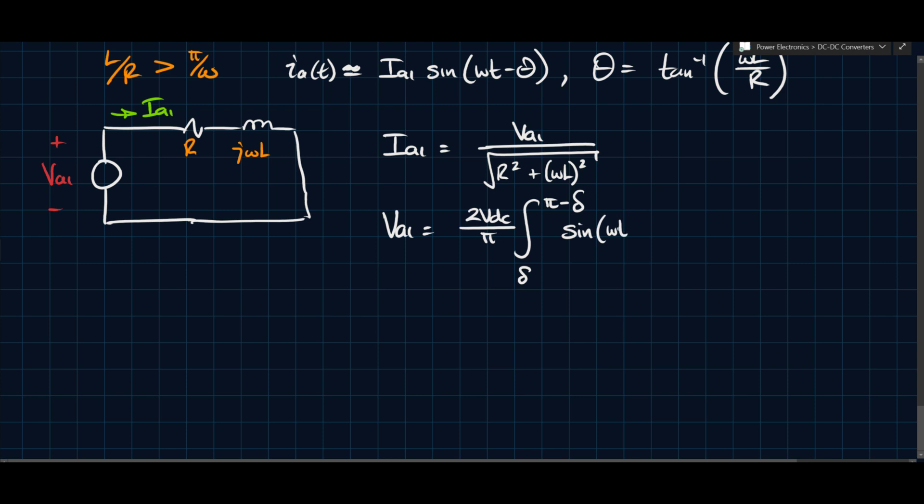You probably won't have to do much of this analysis or much Fourier analysis in a power electronics course, but it's still important that you understand what it is that we're doing. So if you apply this integral here, you'll see that this is 4VDC over pi, and you have a cos delta here.